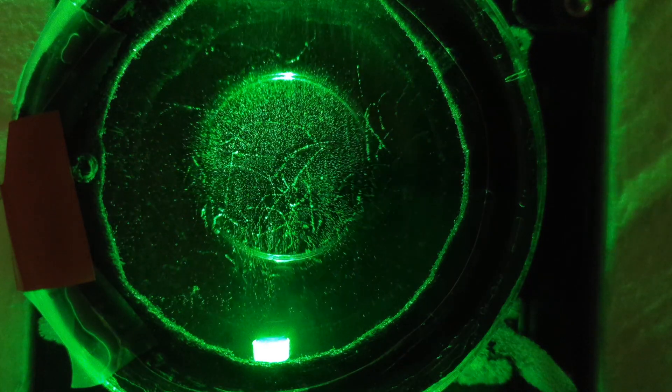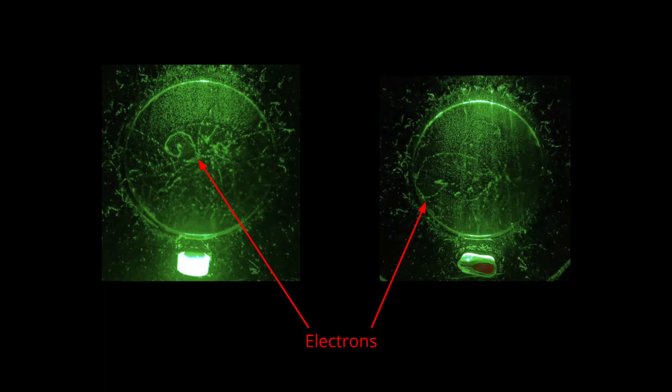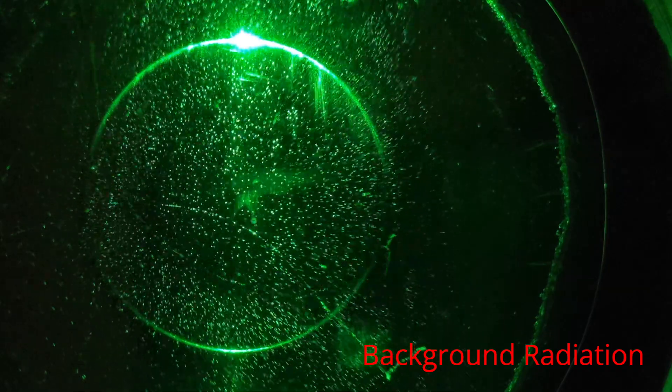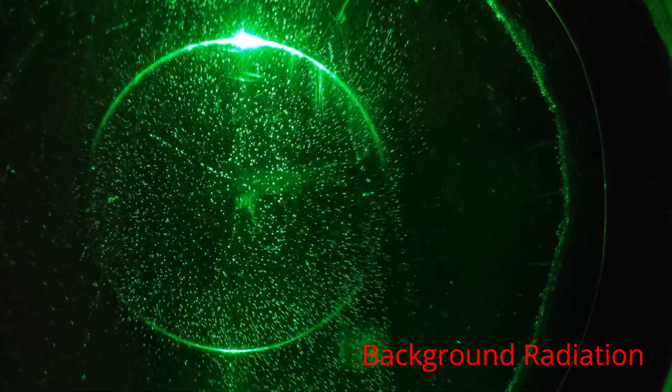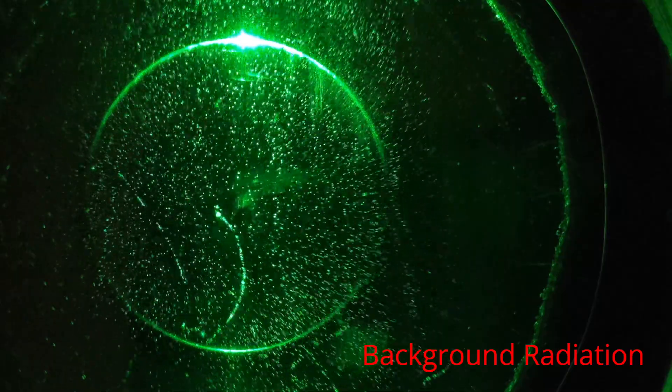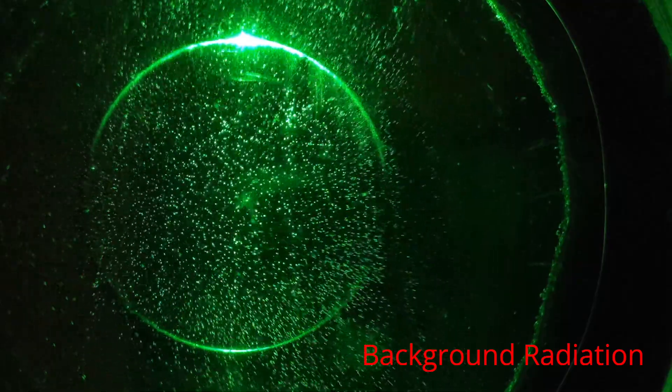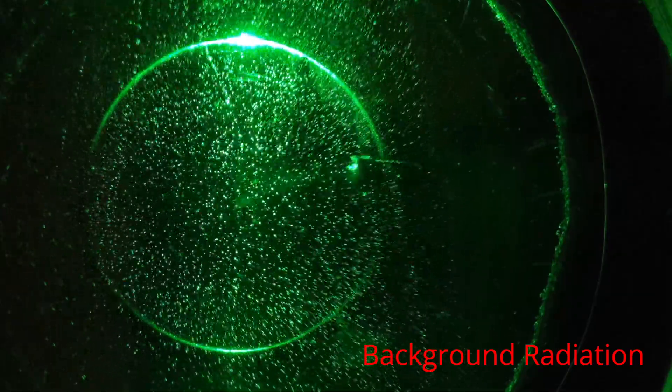But what about all these trails spiraling the other way? I suspect these are electrons, ejected when the gamma rays emitted by the sodium-22 collide with air molecules. Some of them might also be due to background radiation, or electrons caused by the high-voltage electric field in the cloud chamber. But I think it's mostly due to gamma ray collisions, since they largely disappear when the source is removed.